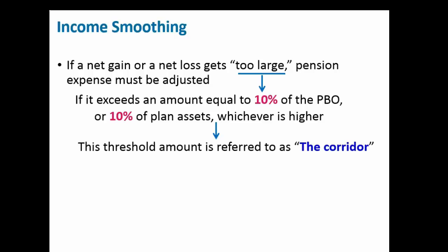What we've talked about with the corridor effect is we're attempting to smooth out significant gains and losses affecting the plan. We have a net loss of $477 coming forward. Turning to the slides: if the net gain or loss is too large — meaning it equals or exceeds the higher of 10% of either the plan assets or the PBO, whichever is higher — the expense must be adjusted. This is what we call the corridor effect.